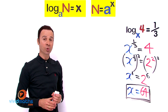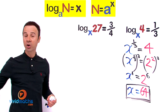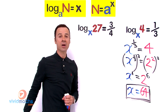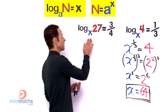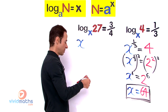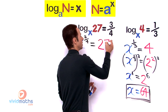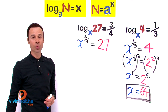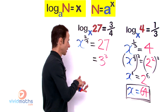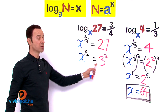Let's try another example where the power is also a fraction — this time 3 quarters. The logarithmic expression is log base x of 27 equals 3 over 4. Taking that and transforming into exponent form, we have x to the power of 3 quarters equals 27. The lowest base for 27 is 3, since 27 equals 3 cubed. So we have x to the power of 3 quarters equals 3 cubed.